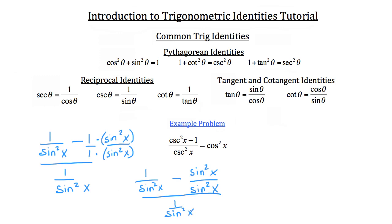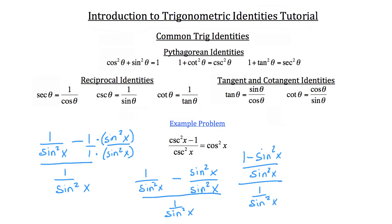Now we want to combine our fractions in the numerator. Because they have like denominators, we can combine them: on top we have 1 minus sine squared x, and on the bottom a common denominator of sine squared x. That's all still over 1 over sine squared x. Since you cannot have a fraction in your denominator, we're going to invert that denominator and multiply — multiply the top fraction by sine squared x over 1. The sine squared x cross-cancels, and we just have 1 minus sine squared x for the left-hand side.